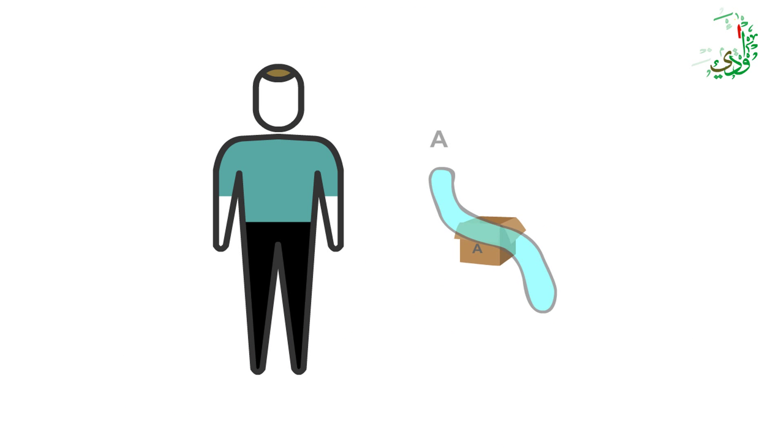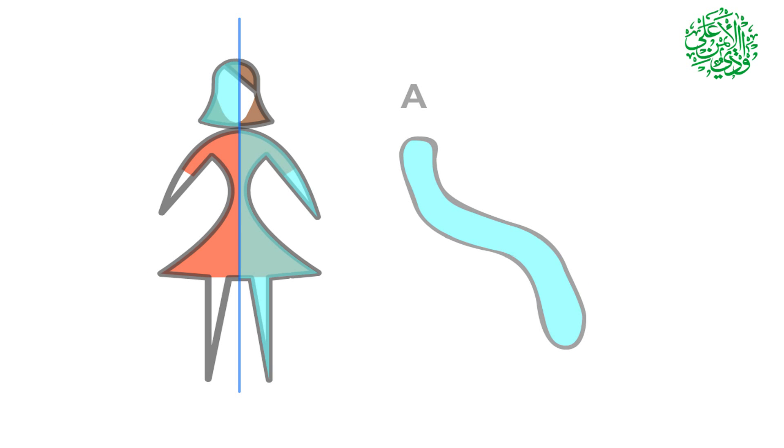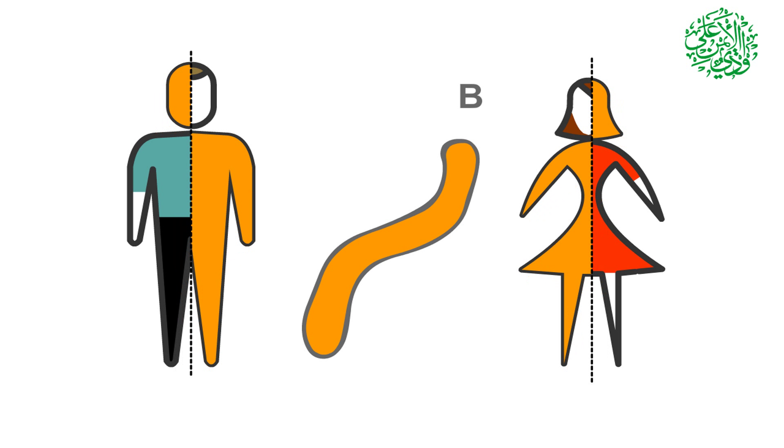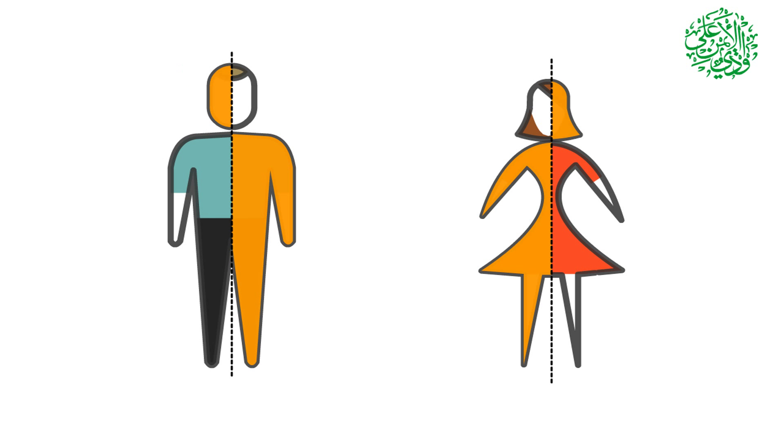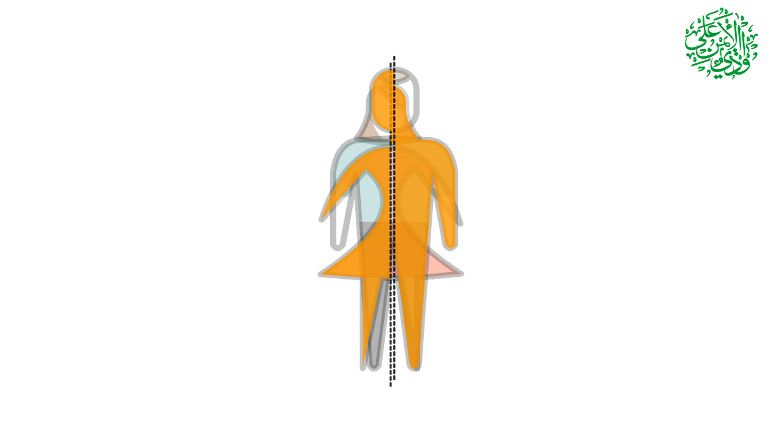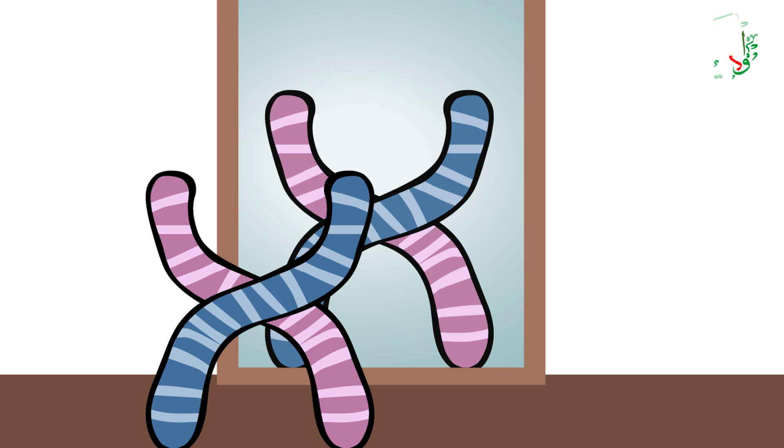Category A controls the right part of a male's body and the left part of a female's body, from head down, and category B controls the left part of the body in males and the right part of the body in females. A and B chromosome categories control the opposite parts in male and female. It means men and women mirror each other in terms of basic cellular structure.